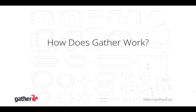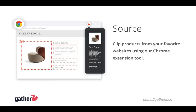So how does Gather work? Gather is a very flexible system, and we try not to dictate your workflow, but oftentimes one of the first steps our users take is to add items to a project. This can be done manually, but the most common way our users add items to Gather is by using our Clipper tool, which is a Chrome extension and lives in your browser.